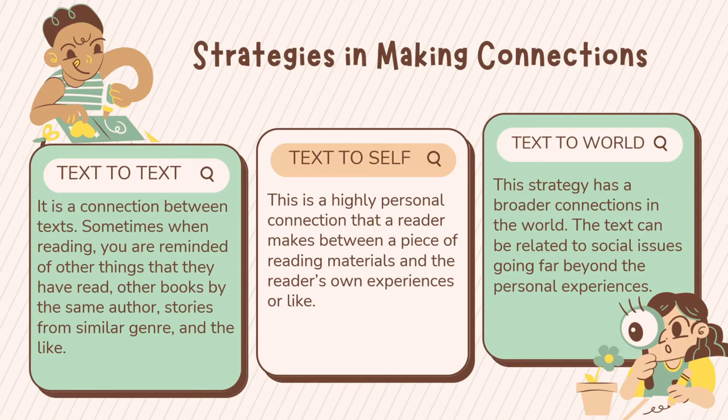The third strategy is text-to-world, which has broader connections to the world. The text can be related to social issues going far beyond personal experiences. Any text connected to world issues or societal issues — such as corruption, politics, war, or religion — these are pressing issues that can be connected to a certain text. These are the three strategies in making text connections: text-to-text, text-to-self, and text-to-world.